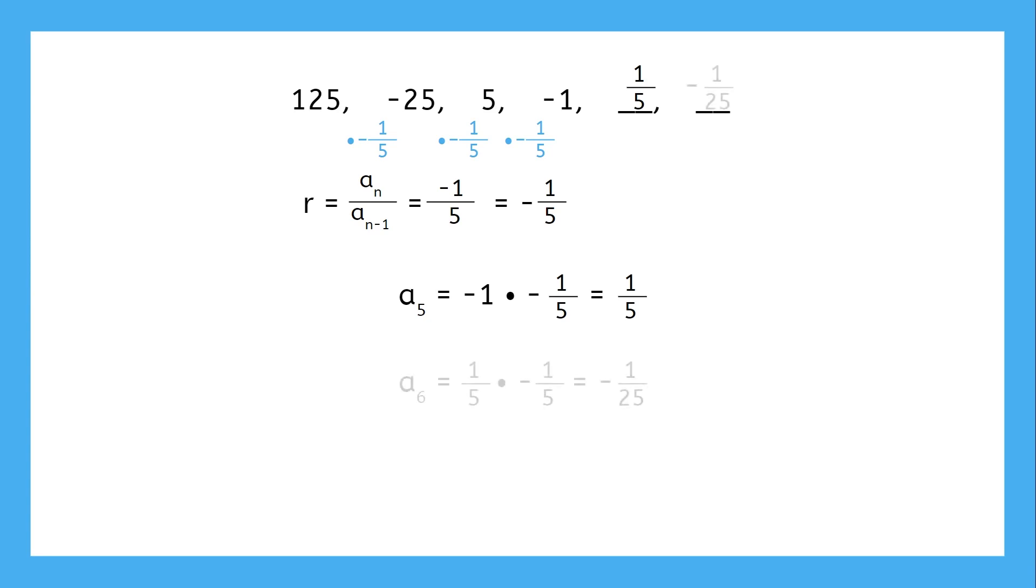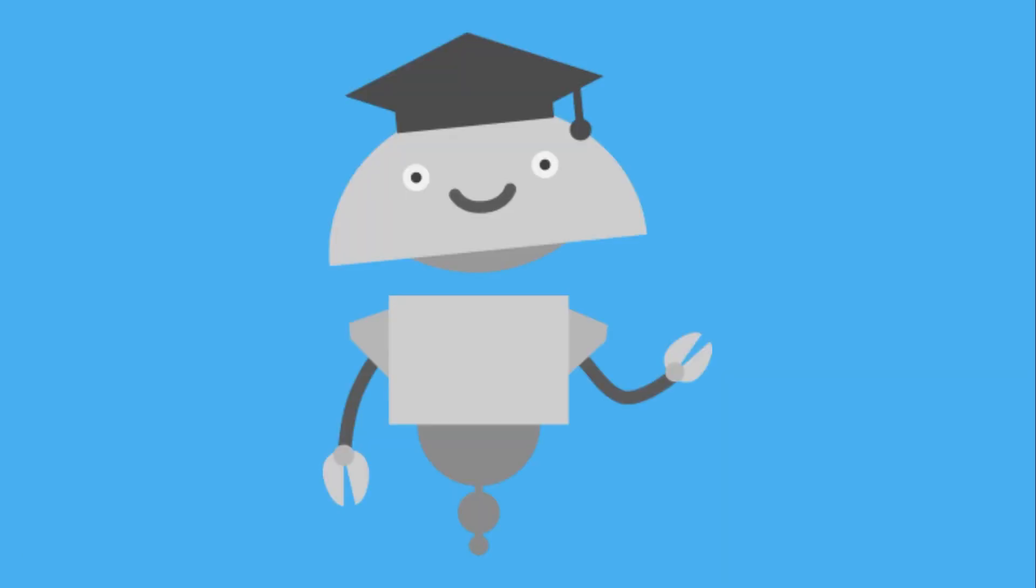And the 6th term will be 1/5 times negative 1/5, which is negative 1/25. Geometric sequences can cause some interesting patterns, but they're still just based on basic multiplication. In the next lesson, we're going to learn how to write formulas to generate geometric sequences, just like we did with arithmetic sequences. See you then!